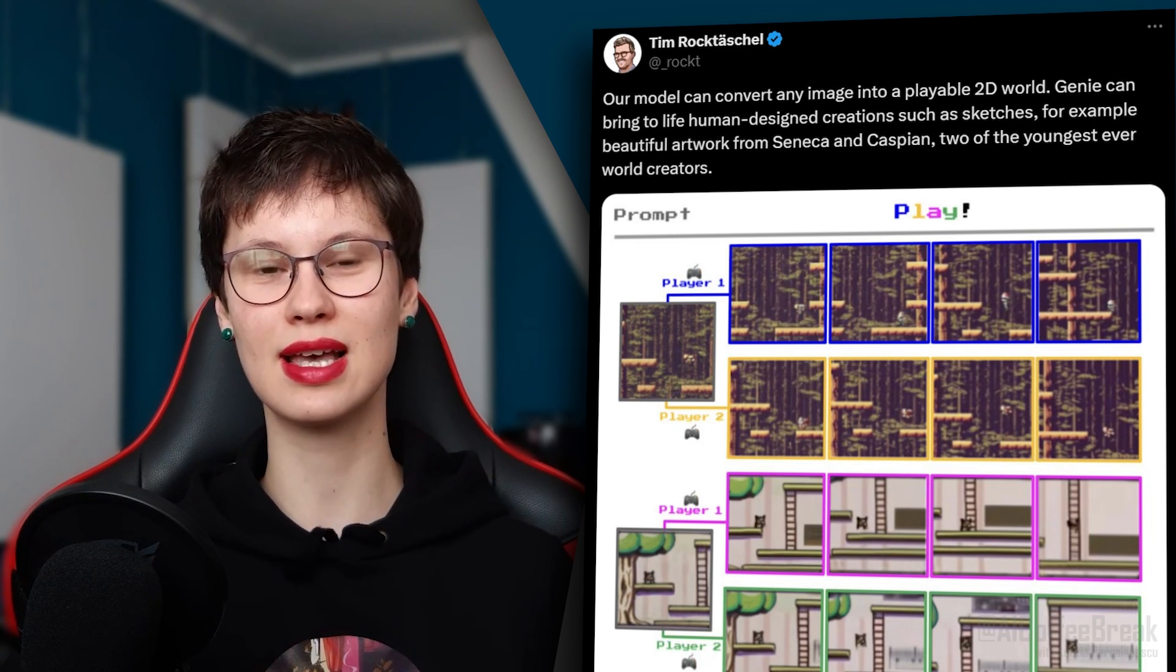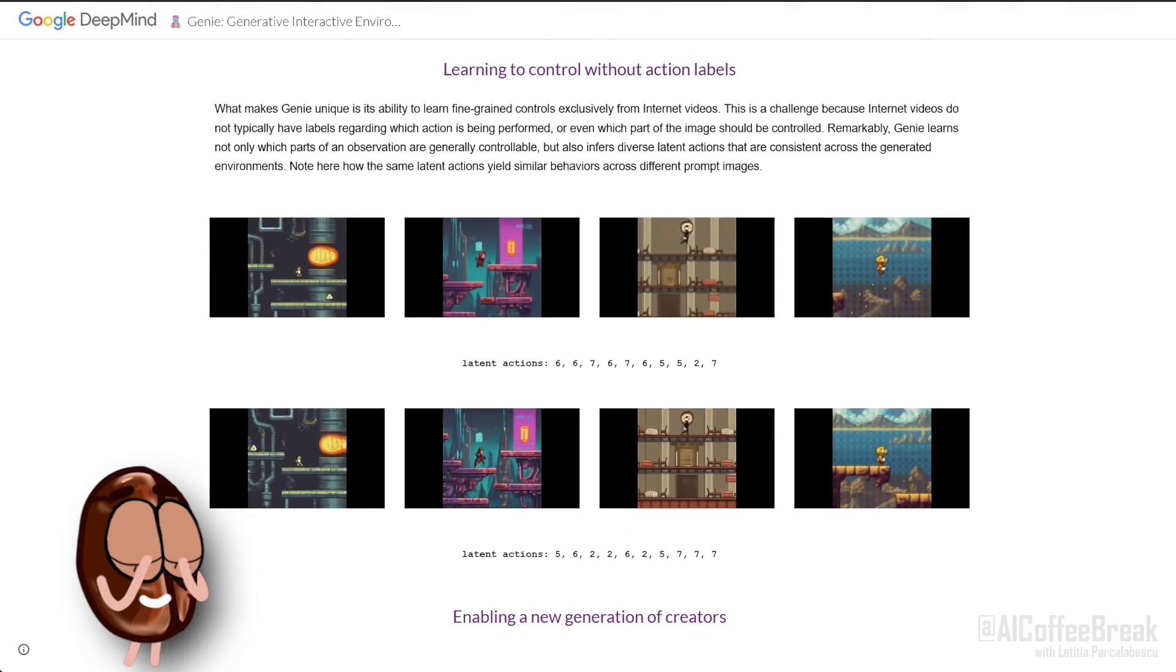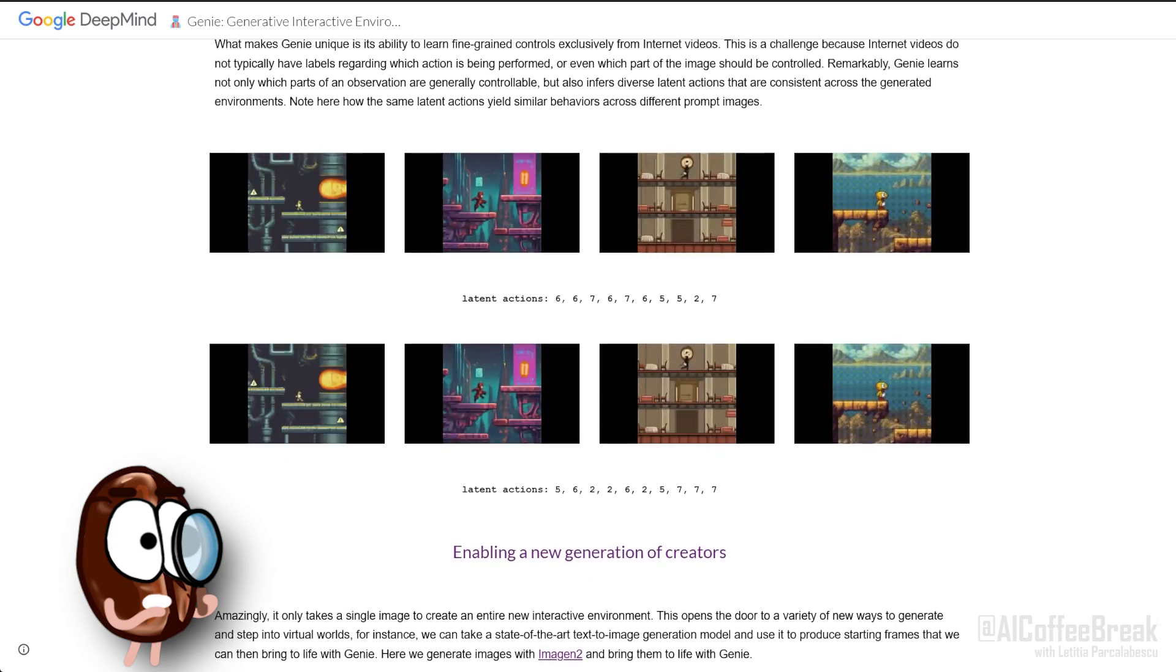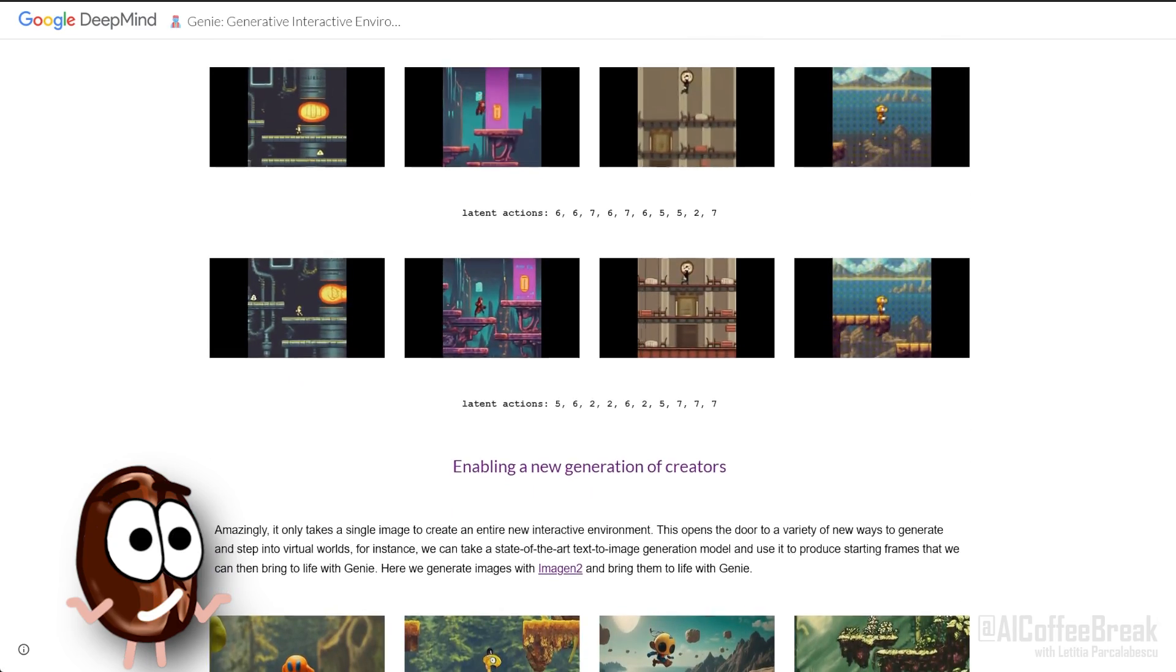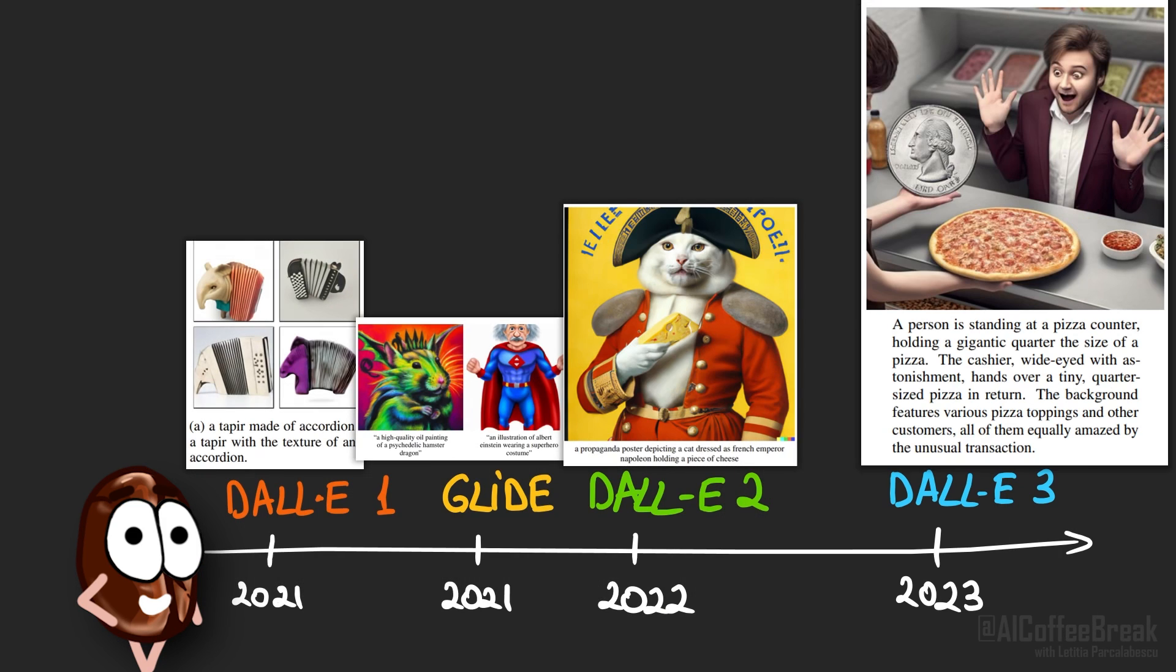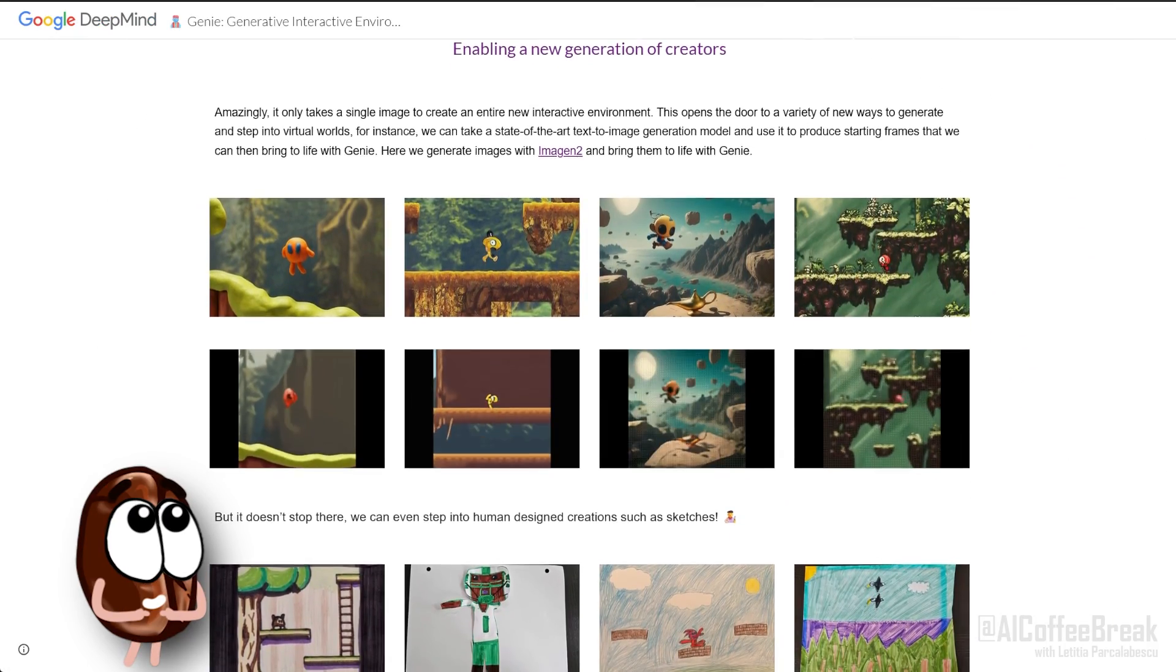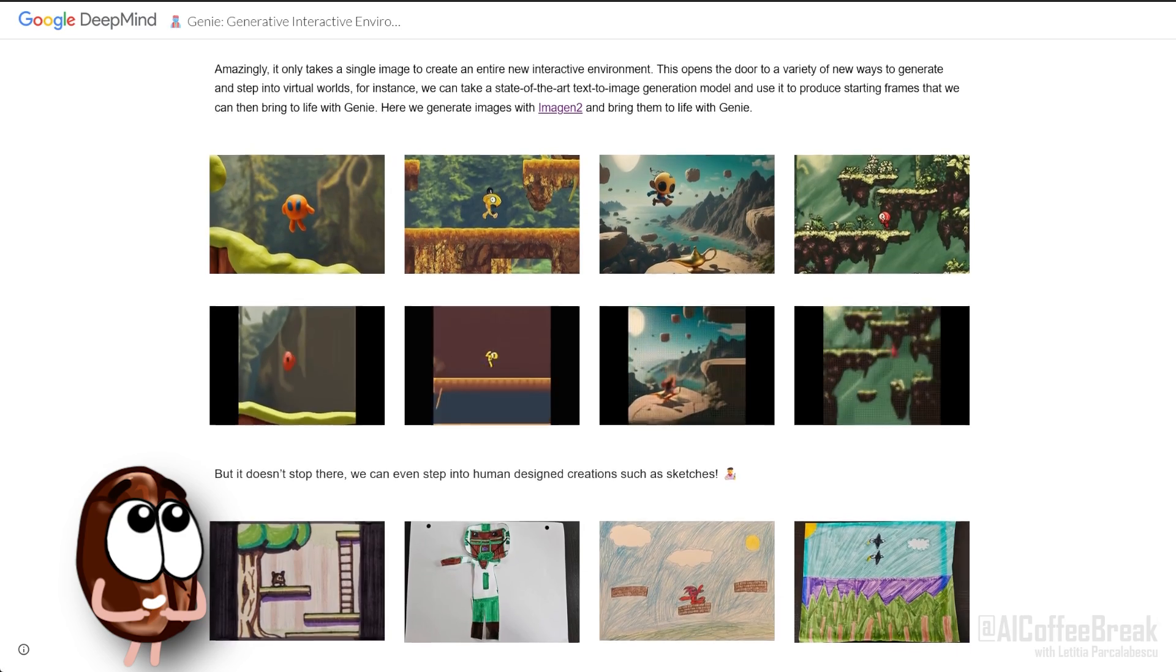I know Genie version one produces small images, not so high resolution, and short interactions overall, and it can hallucinate. But just as we have seen the evolution of text to image models in just a few years from DALL-E 1 to DALL-E 2 to now DALL-E 3, please be patient with this technology and wait a few years.